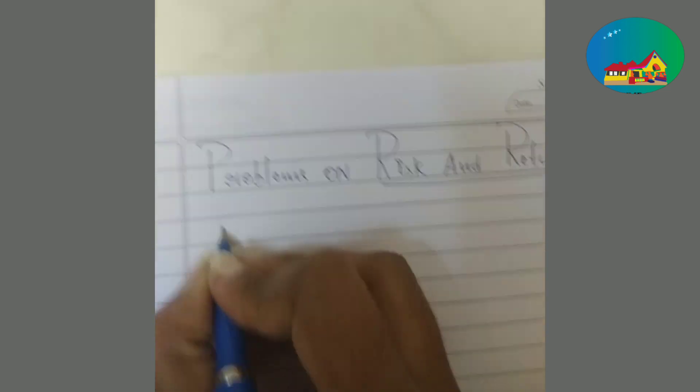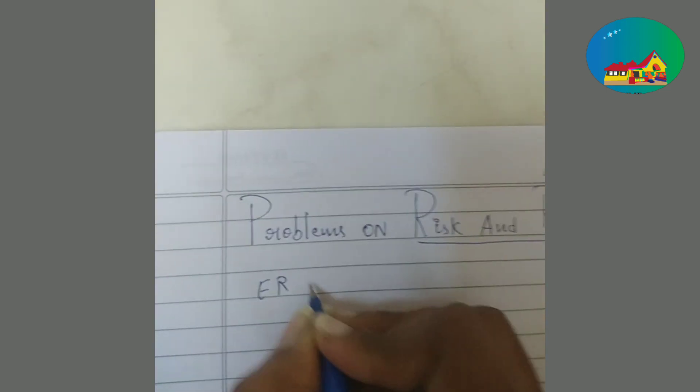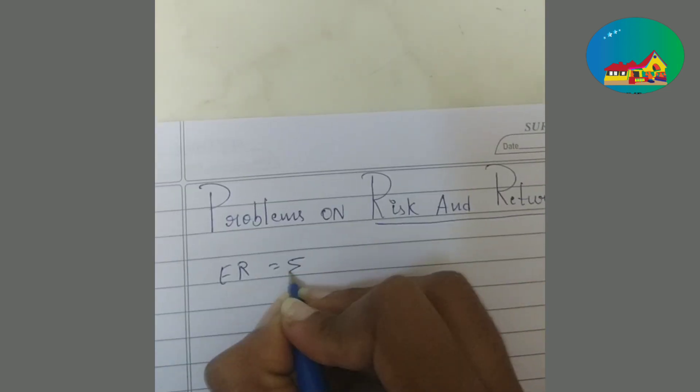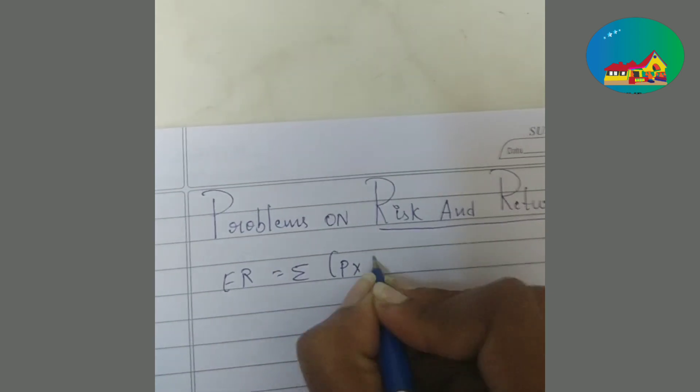Here, the expected return formula is ER = Σ(P × R), where P is equals to sigma P into R.